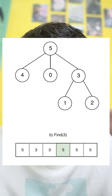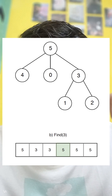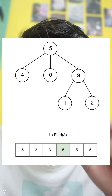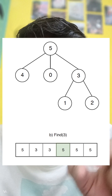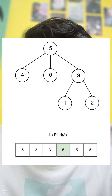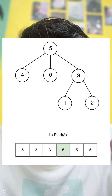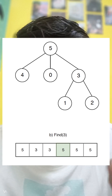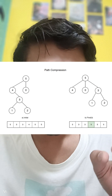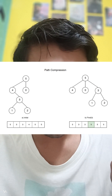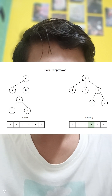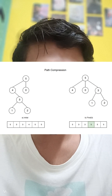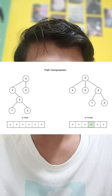When we traverse up the tree to find the root of an element, we make each node on the path point directly to the root. This flattens the structure of the tree, speeding up future operations. So the tree becomes flatter and flatter over time, making future find operations almost constant, or O(1).